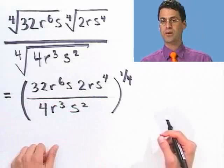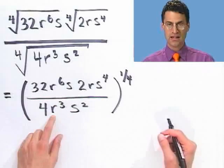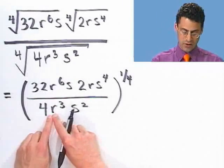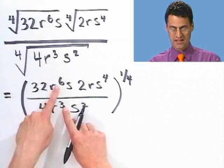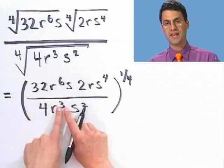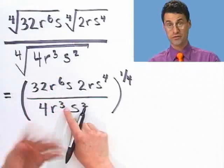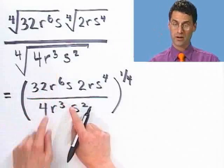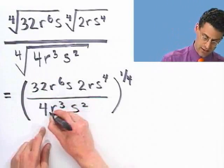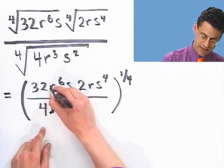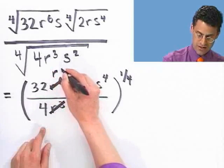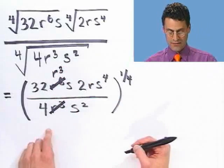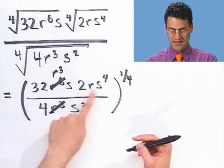Now I can cancel common factors. For example, I have r cubed on the bottom and r to the sixth on top — there are six r's on top and three on the bottom, so canceling leaves r to the third on top.